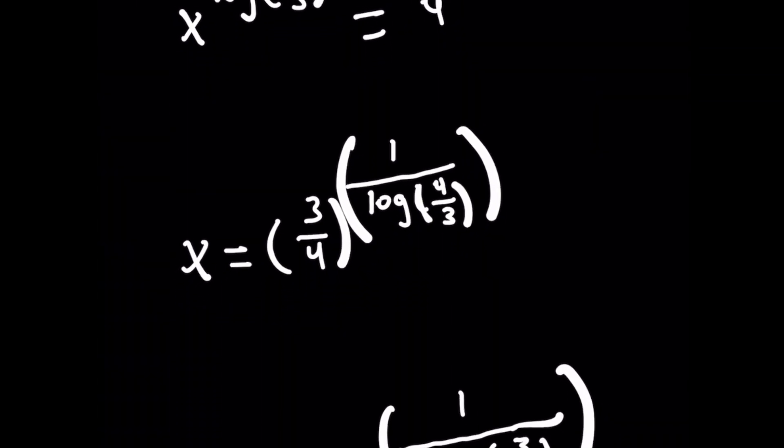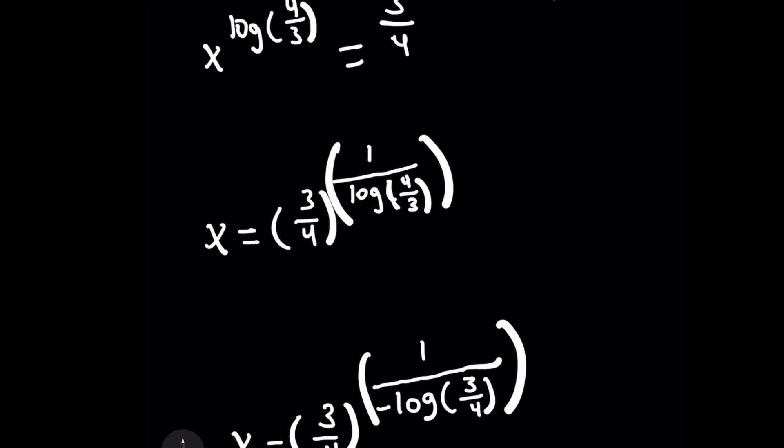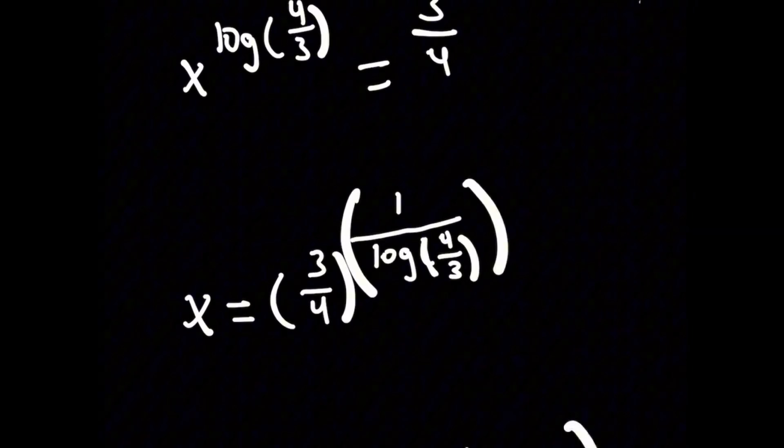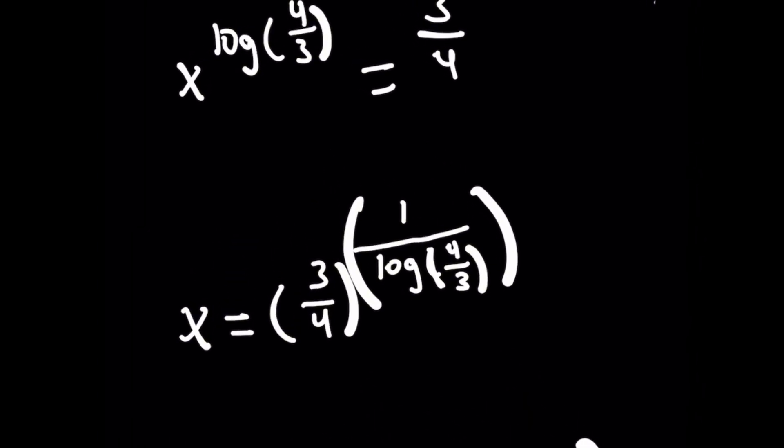This is where we get to use that cool reciprocal trick. Log of 4 over 3 is the same as taking log of 3 over 4 raised to the negative first inside that expression, right? Because 3 over 4 is the same as the reciprocal of 4 over 3.